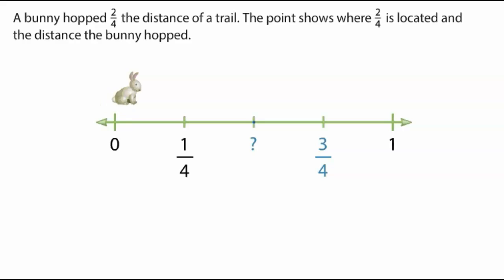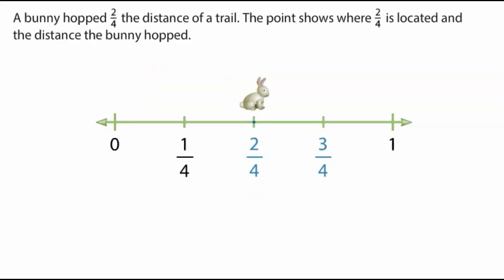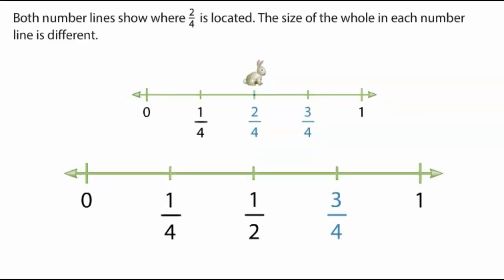A bunny hopped two-fourths the distance of a trail. The point shows where two-fourths is located and the distance the bunny hopped. Both number lines show where two-fourths is located. The size of the whole in each number line is different.